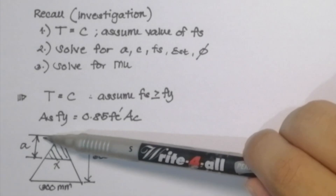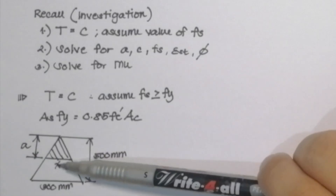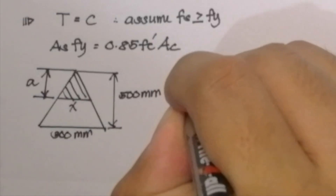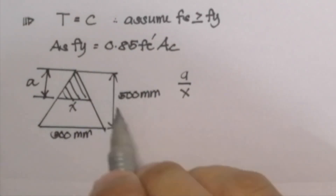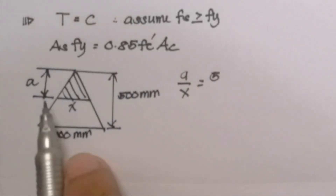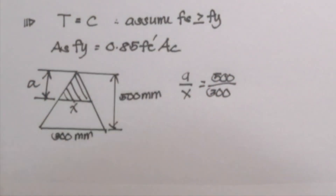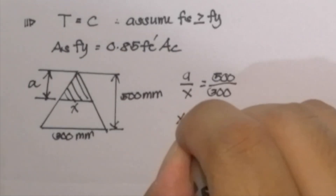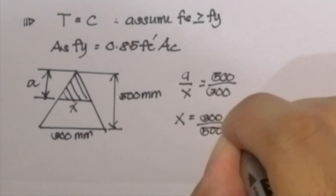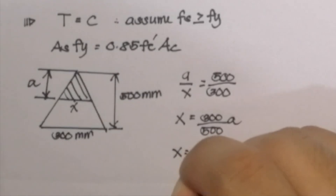The value A is the depth of the compression block and we name the base of the compression block as X. We need an equation with a single unknown, the value of A. By performing ratio and proportion: A is to X for the compression block as 500 is to 300 for the entire beam. So X = (300/500)·A.